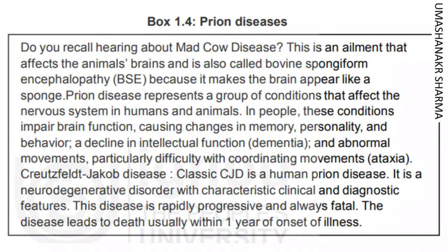Prion diseases — do you recall hearing about mad cow disease? This is an ailment that affects the animal's brain and is called Bovine Spongiform Encephalopathy because it makes the brain appear like a sponge. Prion disease represents a group of conditions that affect the nervous system in humans and animals, causing changes in memory, personality, behaviour, decline in intellectual function, dementia, and abnormal movements including difficulty with coordination, ataxia. Creutzfeldt-Jakob disease, classic CJD, is a human prion disease — a neurodegenerative disorder that is rapidly progressive and always fatal, leading to death usually within one year of onset.